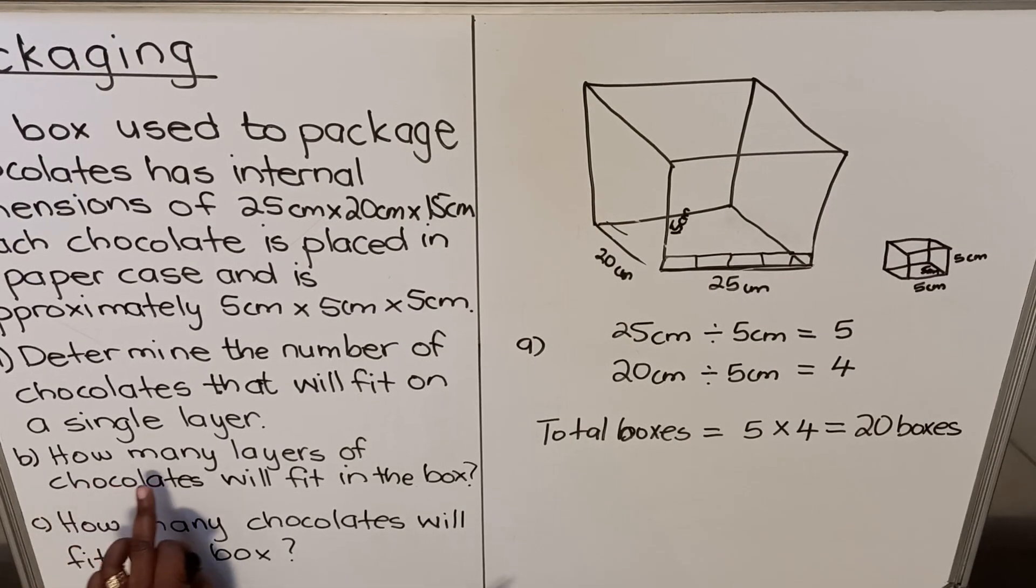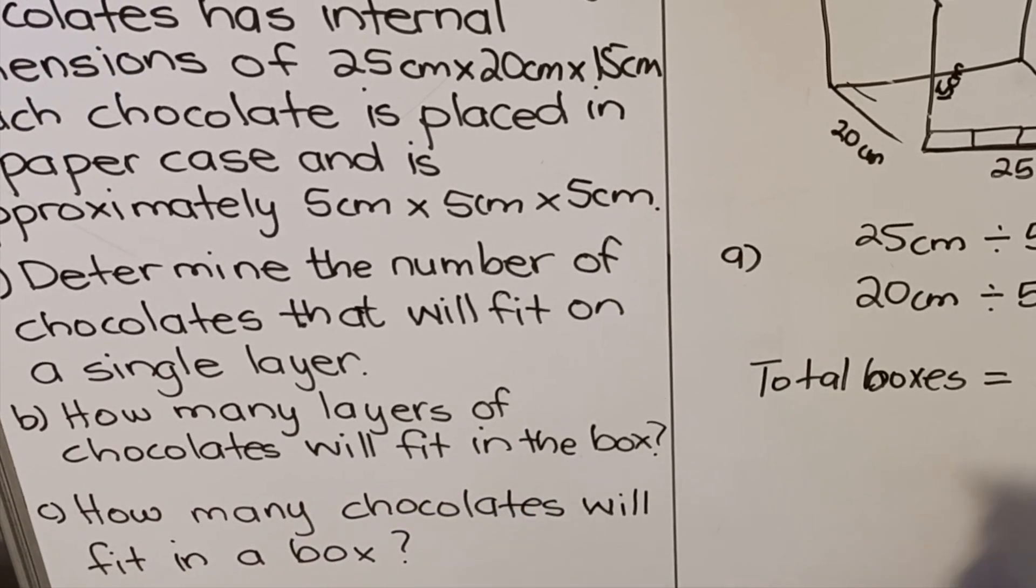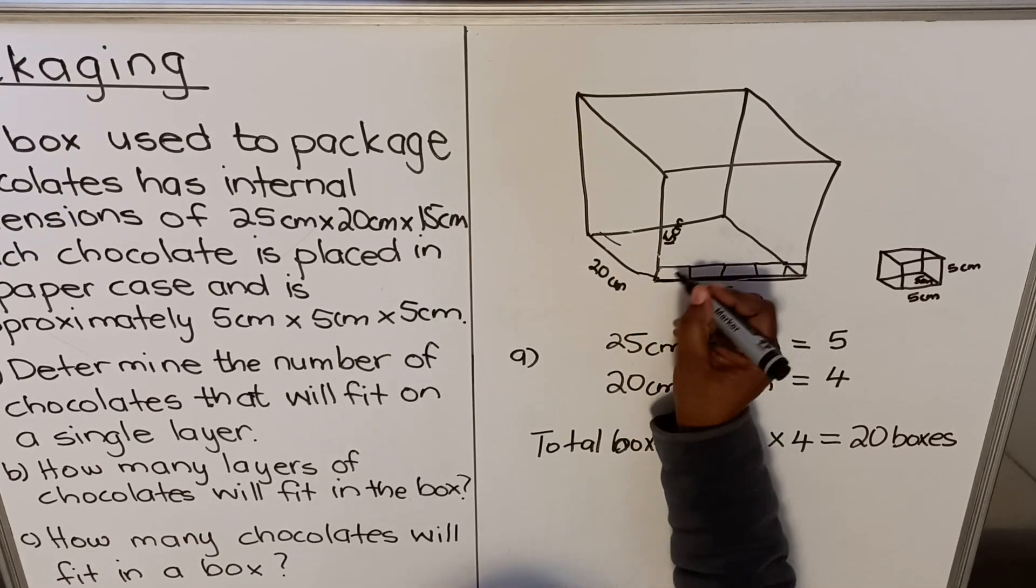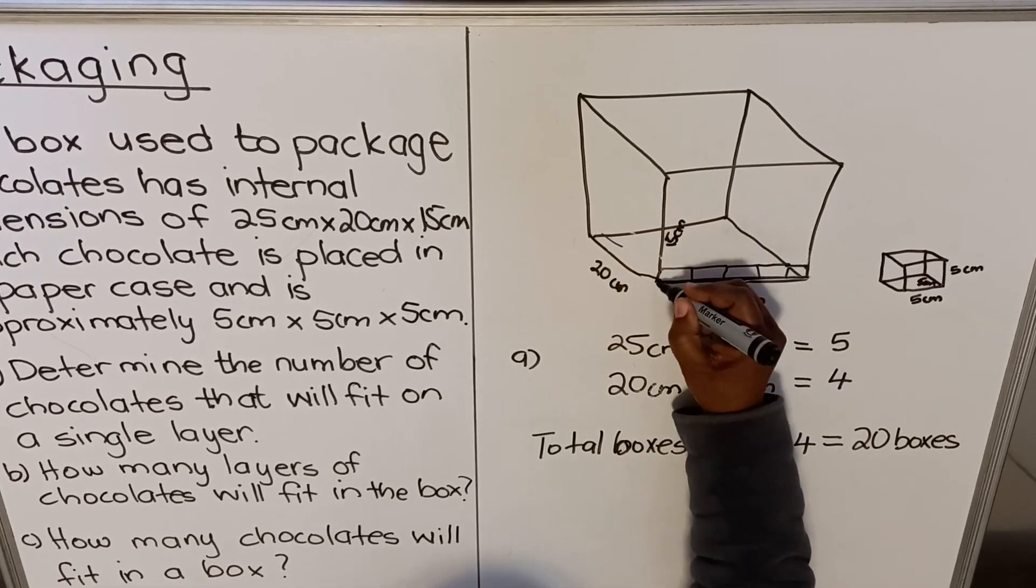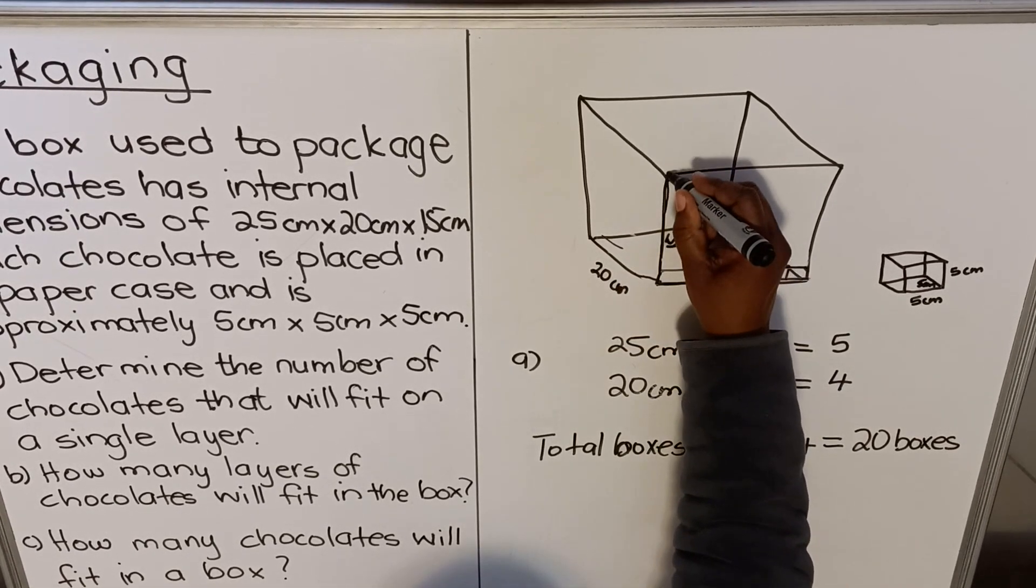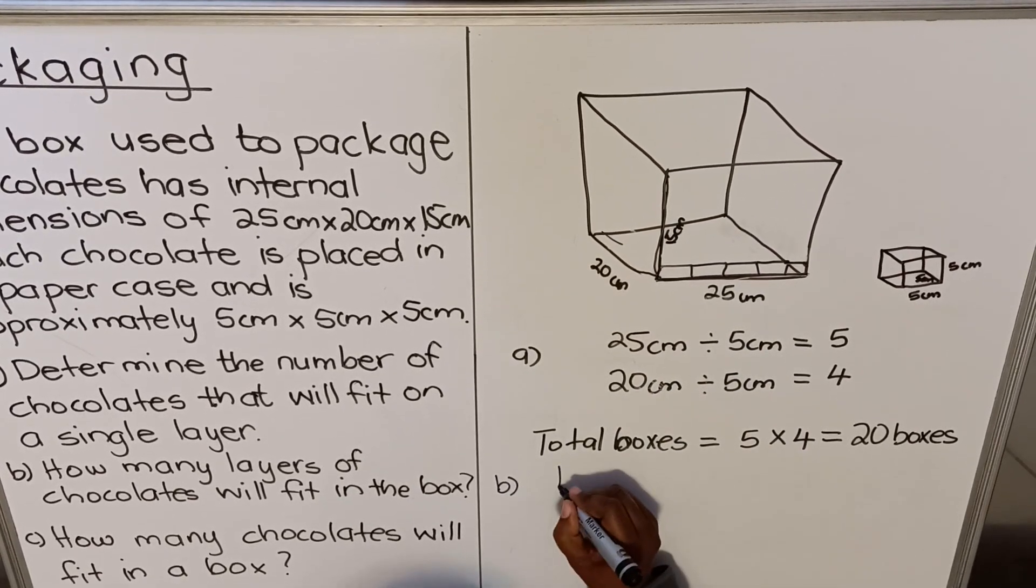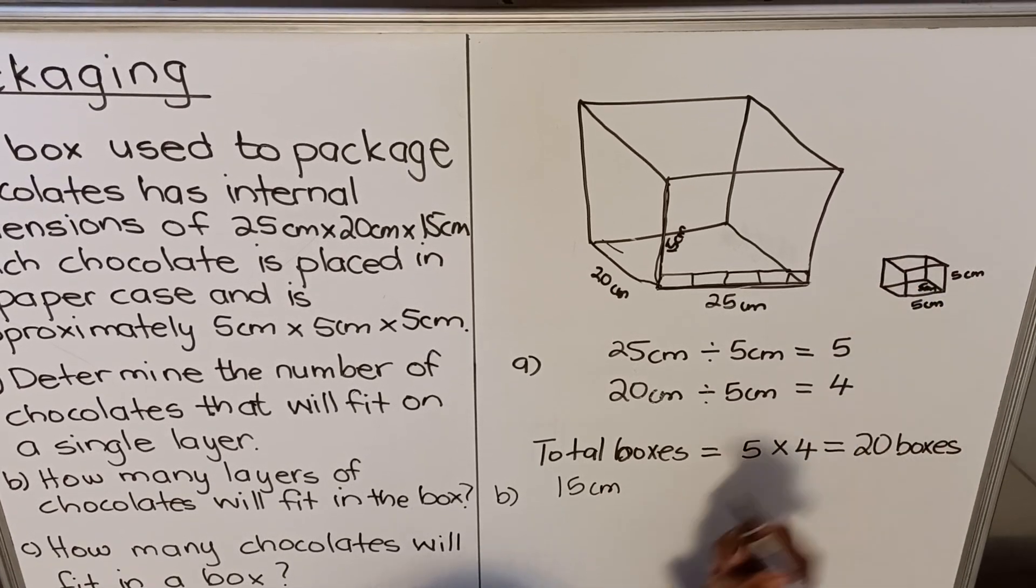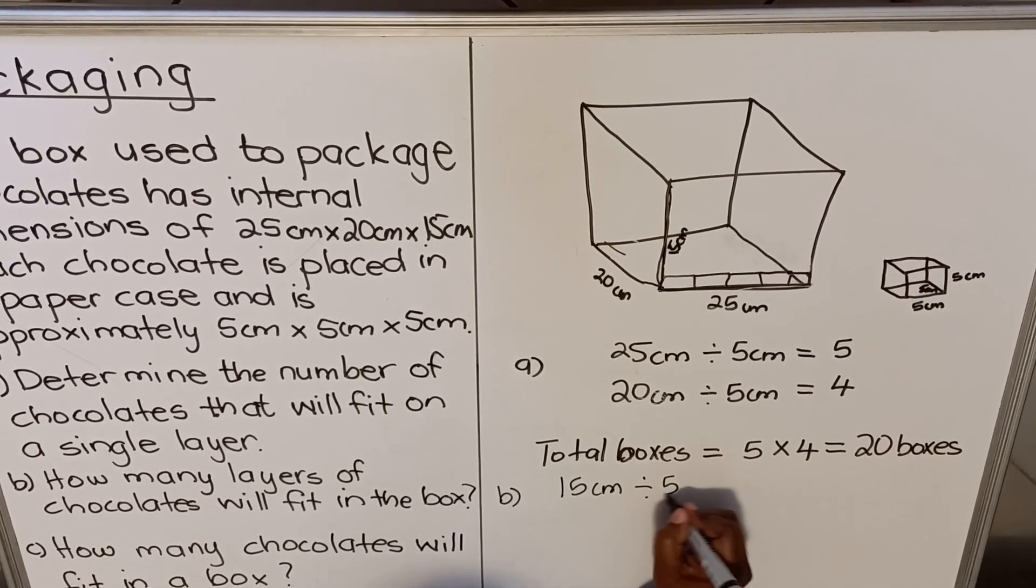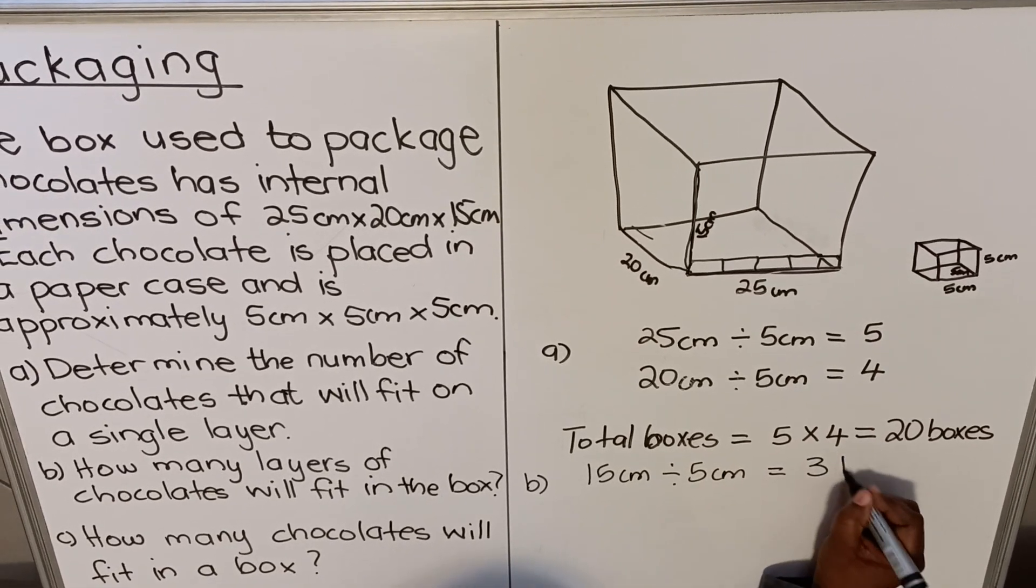B, how many layers of chocolates will fit in this box? Now layers, we have one layer of 20 here. How many layers would I have when I go up? My height is 15. So for B it will be 15 centimeters, but my box height is five, divided by five centimeters, so I'll have three layers. So I'll have three layers of 20, 20, 20.